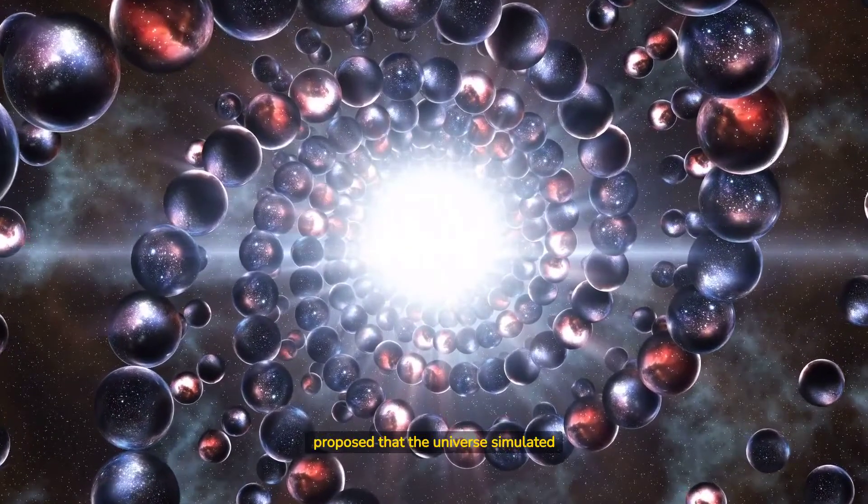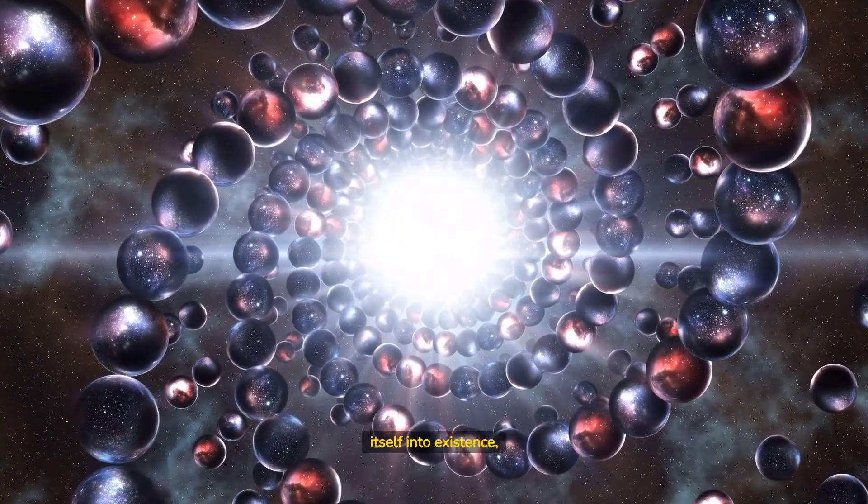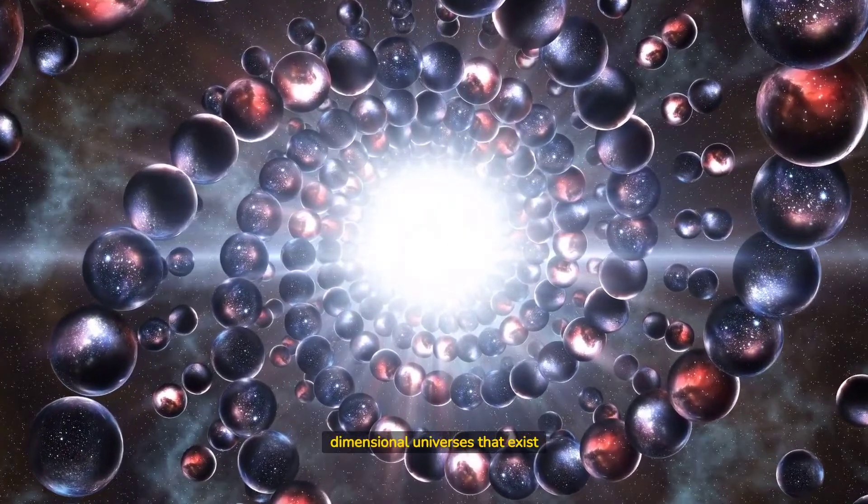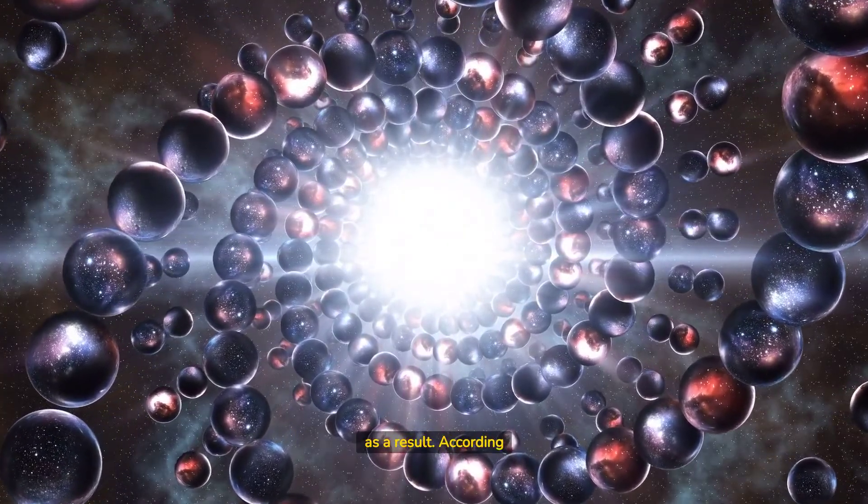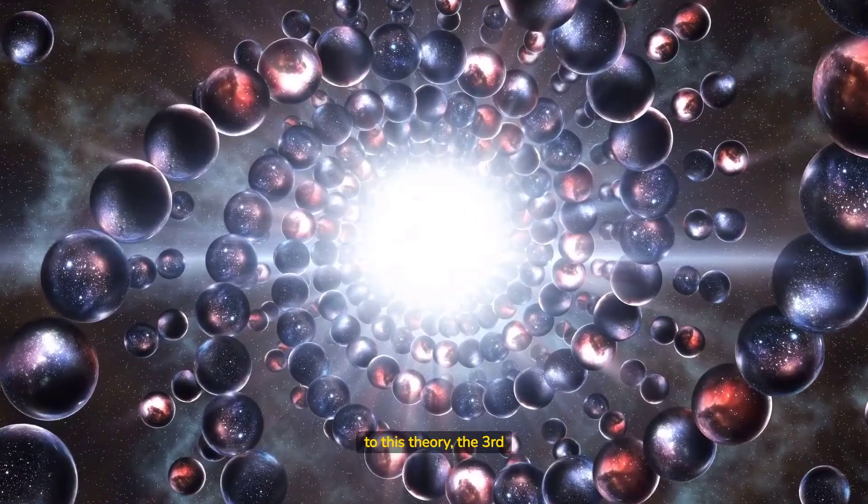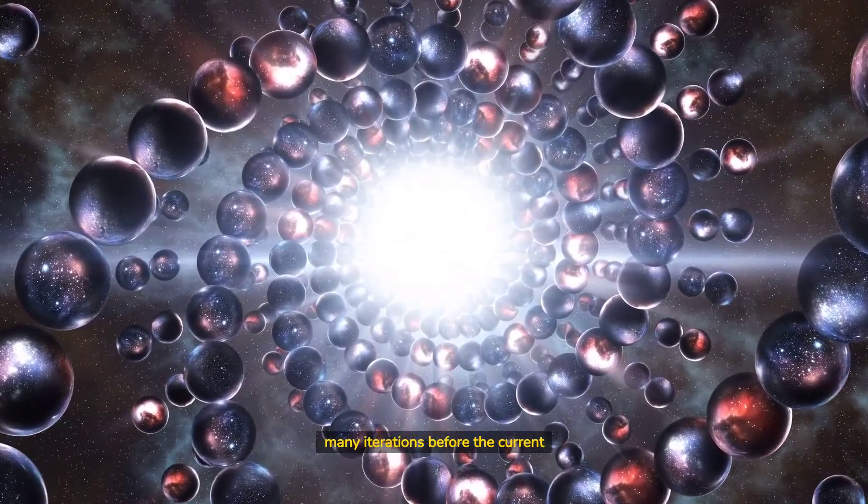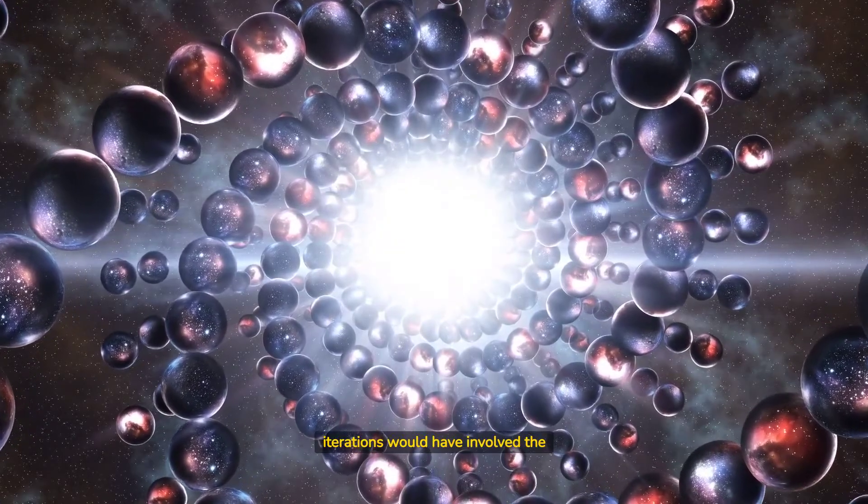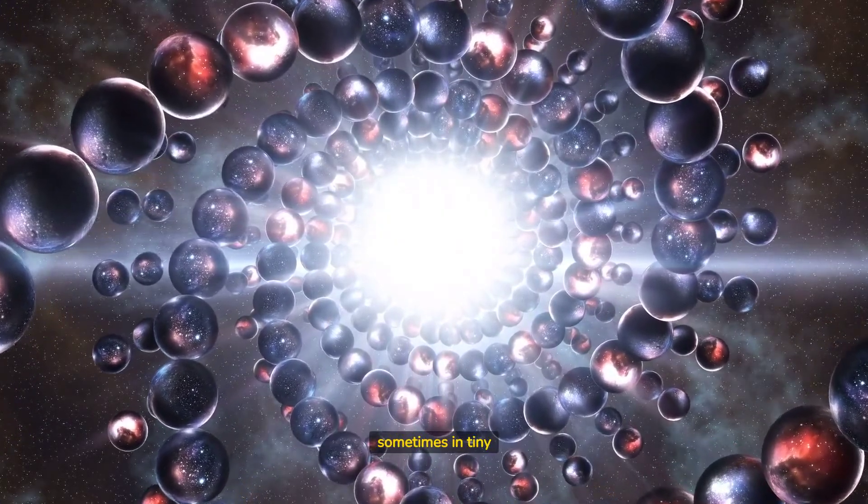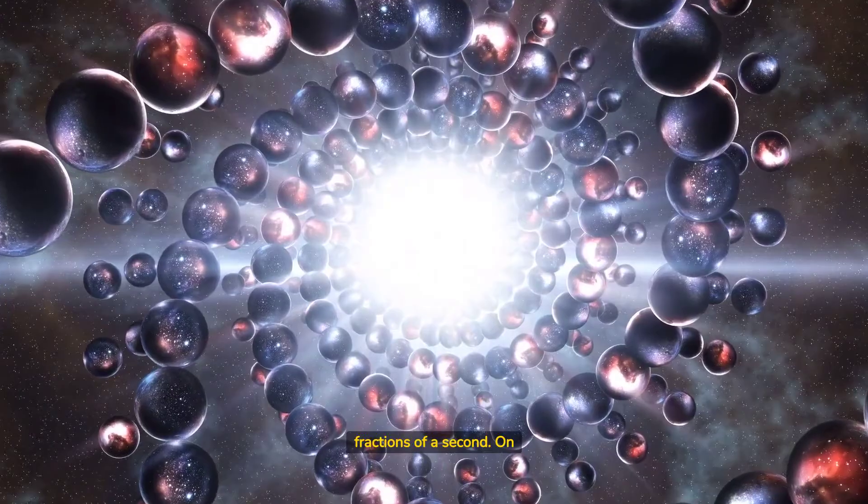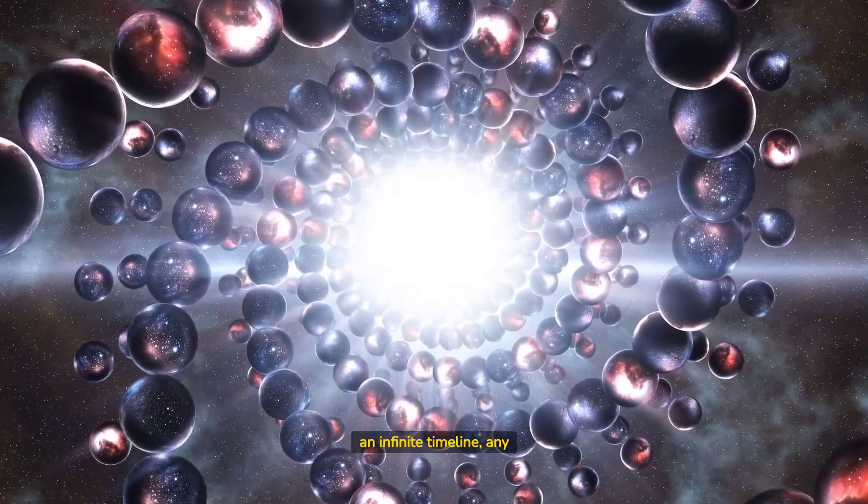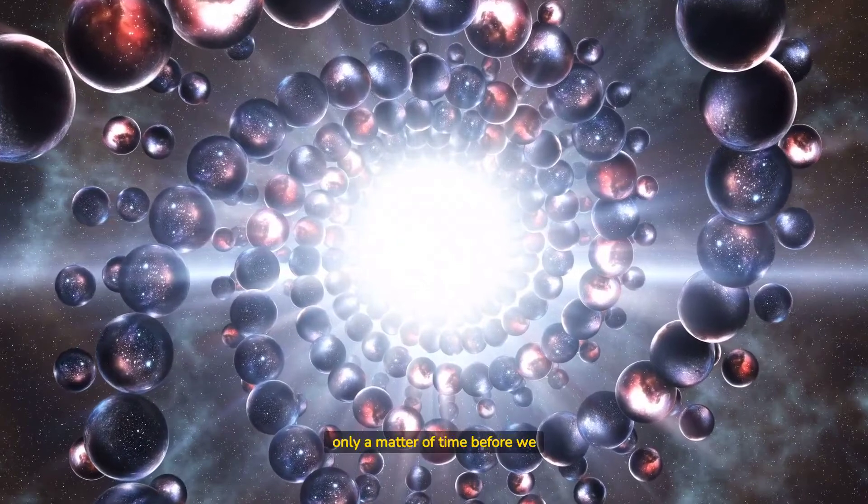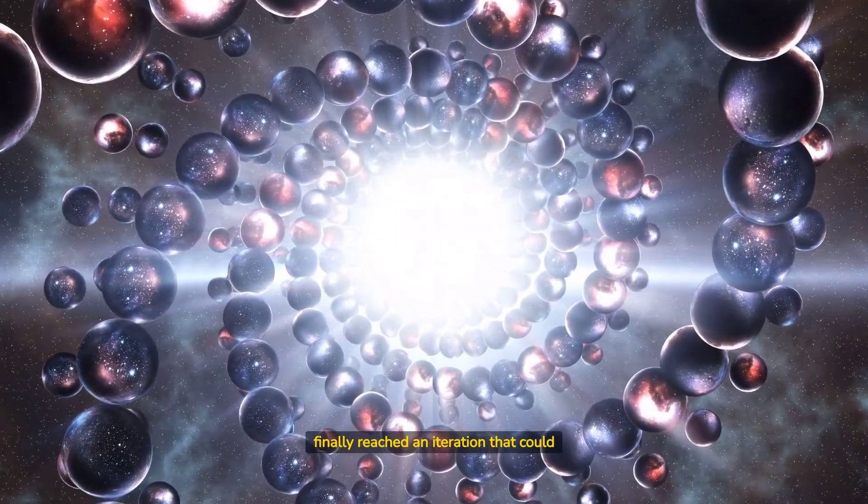A group of researchers has proposed that the universe simulated itself into existence, and that there are likely multiple parallel dimensions, or third-dimensional universes that exist as a result. According to this theory, the third dimension universe would have gone through many iterations before the current one was formed. These iterations would have involved the universe sparking in and out of existence, sometimes in tiny fractions of a second. On an infinite timeline, any arrangement of particles is possible. Therefore, it was only a matter of time before we finally reached an iteration that could support life.